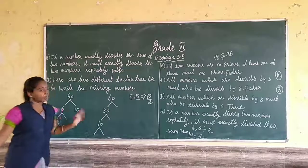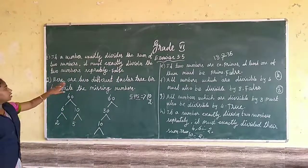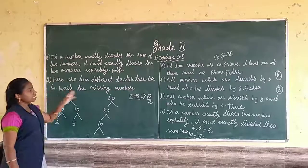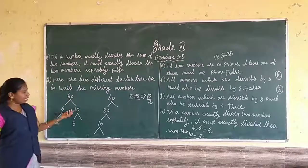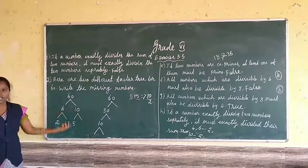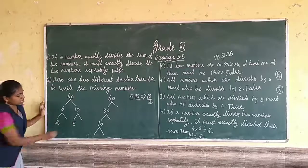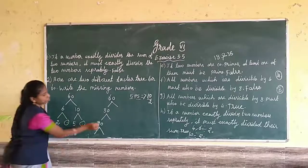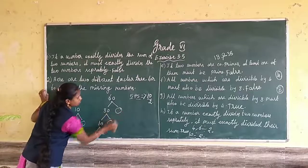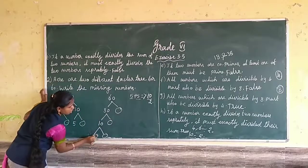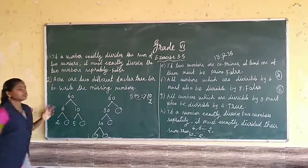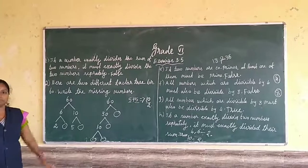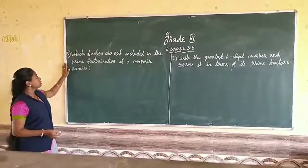The first sum is over. Now the second sum: here are two different factor trees with missing numbers — you want to write the missing numbers. This is the homework for you. Now we will move to the third sum, which asks which factors are not included in the prime factorization of a composite number.